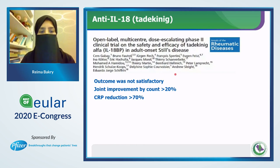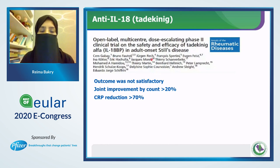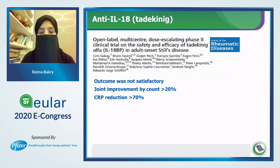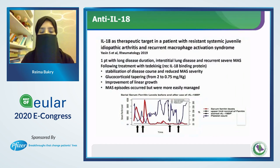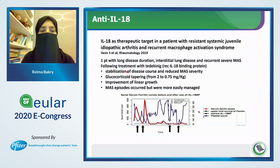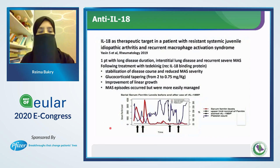An open-label multicenter dose-escalating phase 2 trial of anti-IL-18 — tadekinig alfa — was done in adult-onset Still's disease. The outcome was not fully satisfactory; joint improvement was only 20%, but there was good CRP reduction. The only study in the pediatric age group is a case report of a patient with long-standing disease, interstitial lung disease, and recurrent severe MAS. Following treatment with tadekinig alfa, the patient had stabilization of disease course, reduced MAS severity, and steroids were reduced from 2 mg/kg to 0.7 mg/kg with improvement in linear growth.